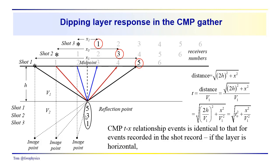At this point, you should recall that the time-distance relationship derived for reflection events in a common midpoint gather was identical to the one derived for events recorded in a shot record. Remember a shot — we just have a shot with several receivers, recordings of reflection events at receivers one through six, for example. The difference between the common midpoint gather and the shot gather really is just one of sorting, in the horizontal layer case — and this similarity in response only holds for the horizontal layer case.